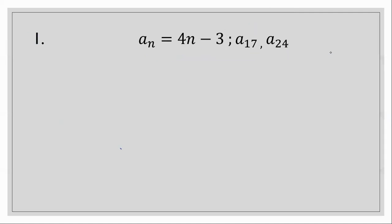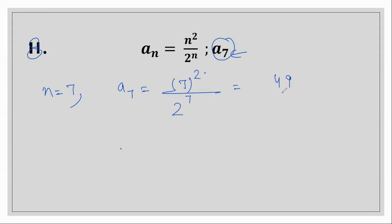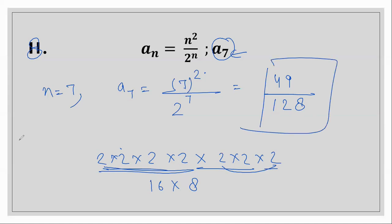Question number 8: an equals n squared divided by 2 raised to the power n. We have to find a7, so n equals 7. a7 equals 7 squared over 2 to the power 7. 7 squared is 49. For 2 to the power 7, we multiply 2 seven times: 2×2=4, ×2=8, ×2=16, ×2=32, ×2=64, ×2=128. So a7 equals 49 over 128.